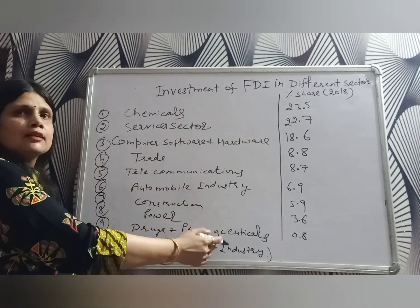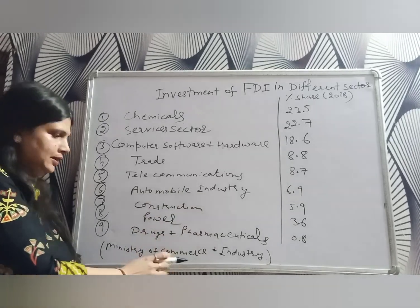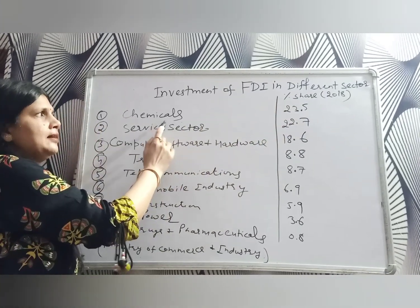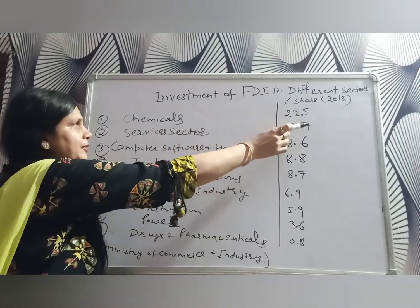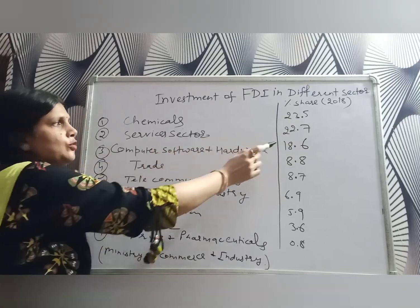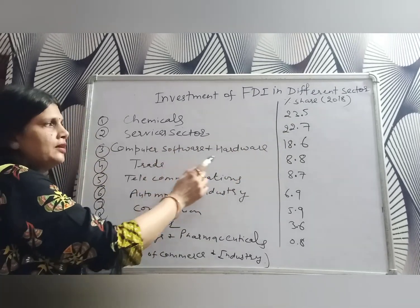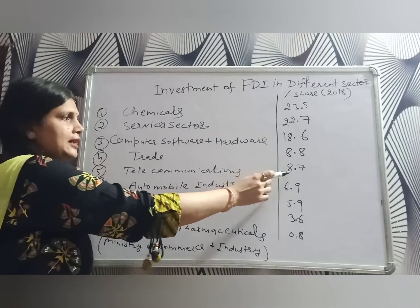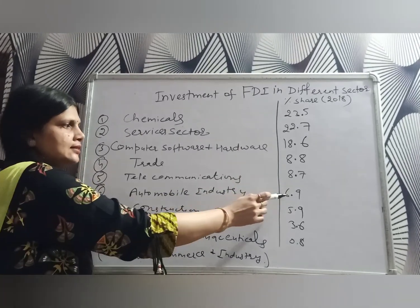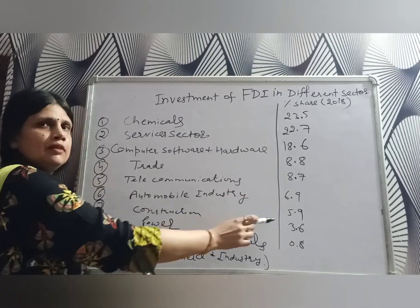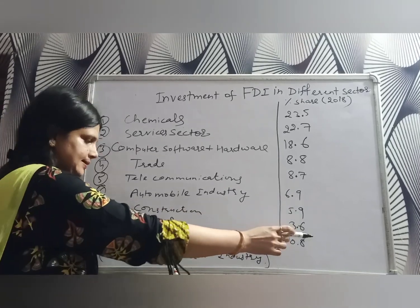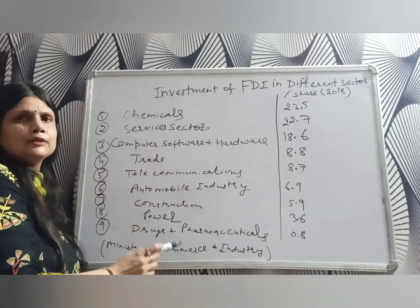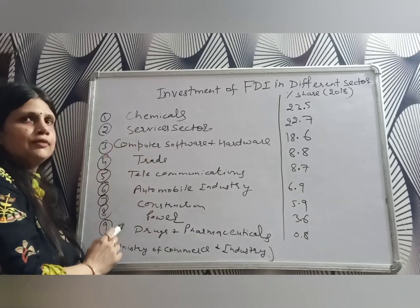The next topic is FDI investment in different sectors. According to the Ministry of Commerce and Industries in 2018: chemical sector has an FDI share of 23.5%, service sector 22.7%, computer software and hardware 18.6%, trade 8.8%, telecommunication 8.7%, automobile industries 6.9%, construction 5.9%, power 3.6%, and drugs and pharmaceuticals 0.8%. These are the FDI share percentages across different sectors.